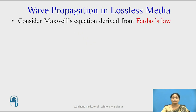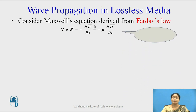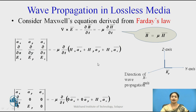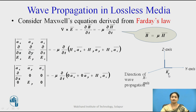Let us start with the derivation of the wave equations in a lossless media. We will consider Maxwell's equation derived from Faraday's law. As we know the relationship between B and H: B-bar is equal to mu H-bar. We substitute the value of B as mu H-bar and expand del cross E-bar in x, y, and z coordinates. We assume the electric field is in the y-direction and the wave is propagating in the x-direction.